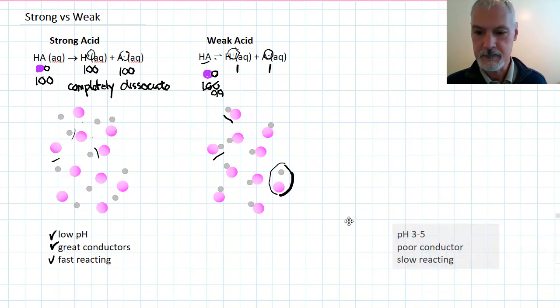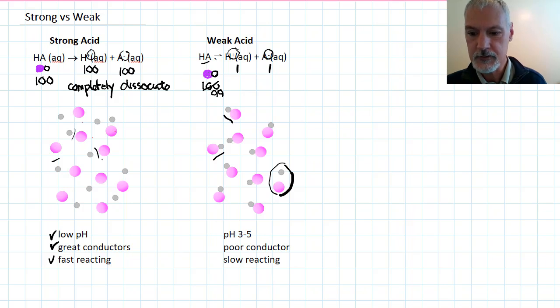However, this leads to substances that are very poor conductors of electricity because of how few ions you have present. Because you produce very few hydrogen ions, you also happen to have pHs that are somewhat higher than the pHs of strong acids. And finally, these are very slow reacting.